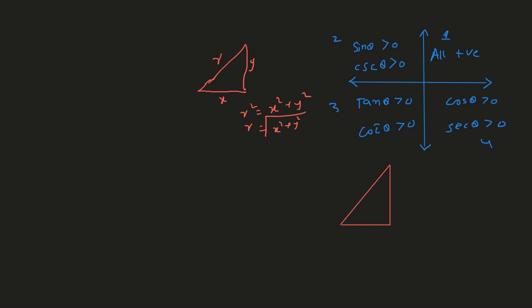This is a right-angle triangle. If we take any trig function like sine of theta — that is perpendicular over hypotenuse, y over r — that is positive, because y is positive and r is also positive, so sine theta would be positive. For tan theta, which is perpendicular over base, y over x — because y is positive and x is positive, tan would also be positive. Similarly, we can check all the trig functions in this way, and we get all trig functions positive in the first quadrant.